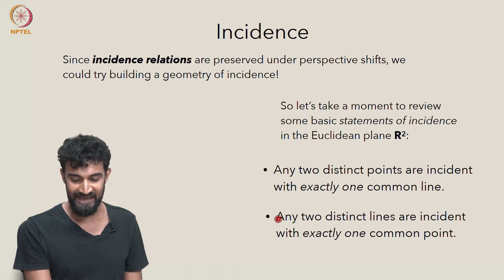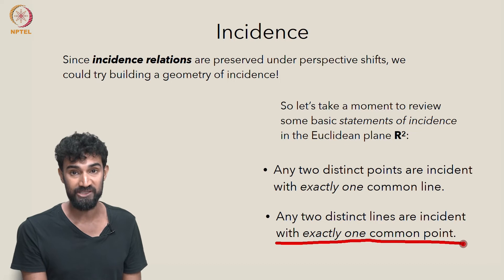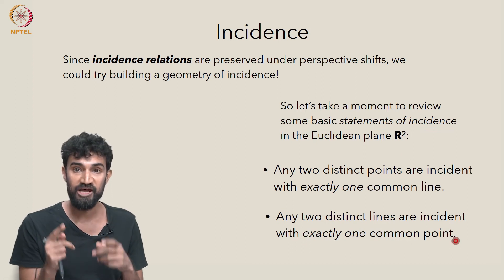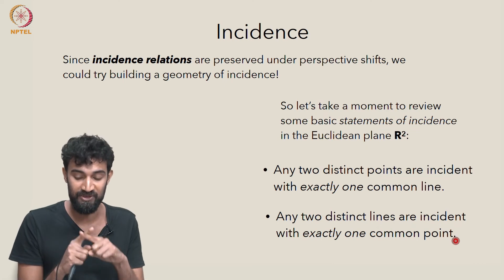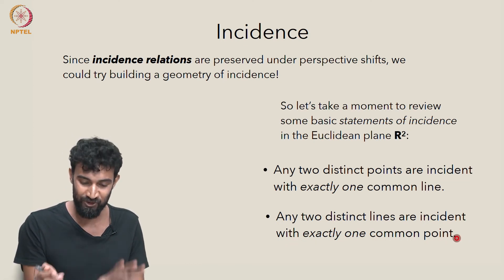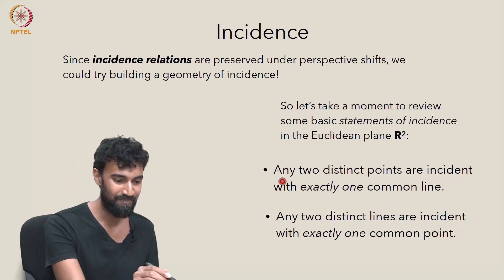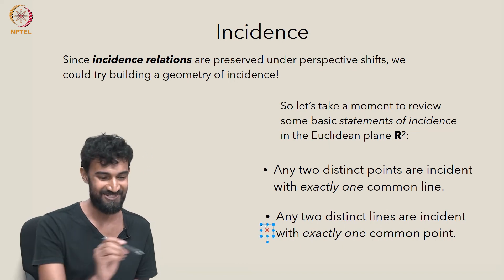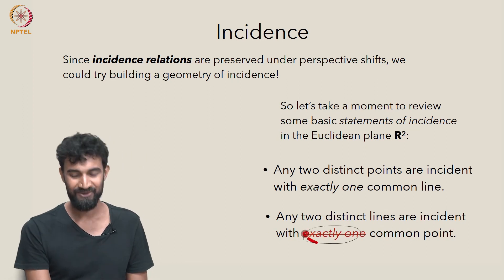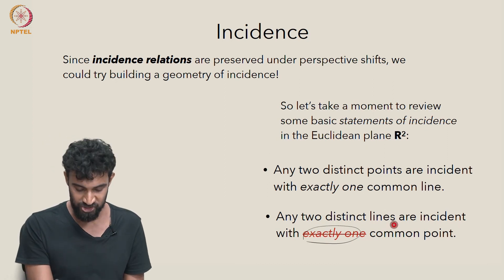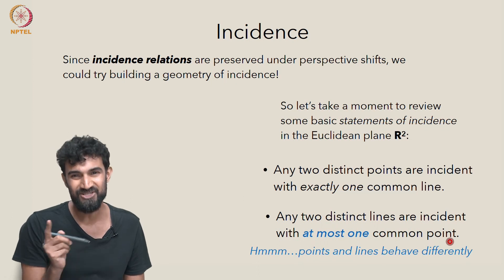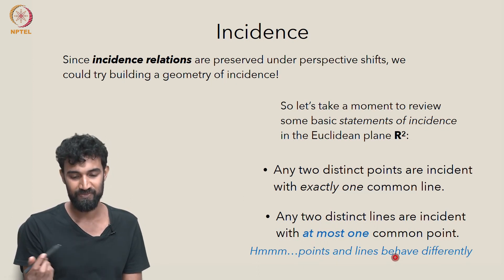Here's another statement of incidence: any two distinct lines are incident with exactly one common point. So we're in R2, the Euclidean plane. Any two lines in R2 share exactly one common point — they intersect in one common point. Unfortunately, this statement of incidence is false, because we know that parallel lines exist in R2. There are distinct lines which don't share a common point. So to make this a true statement of incidence, we better change it to saying 'at most one common point,' which also reveals that points and lines behave a little differently from one another in the geometry of R2.